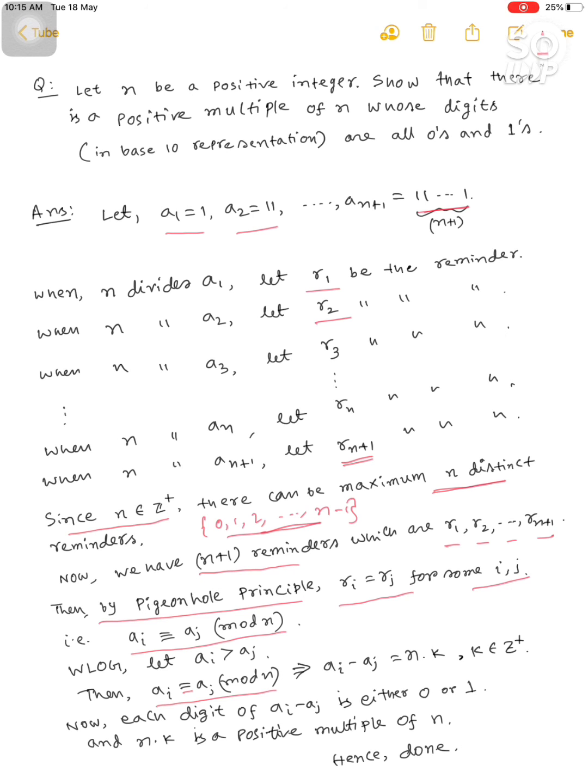Now, each digit of a_i minus a_j is either 0 or 1, and n times k is a positive multiple of n. So we are done.